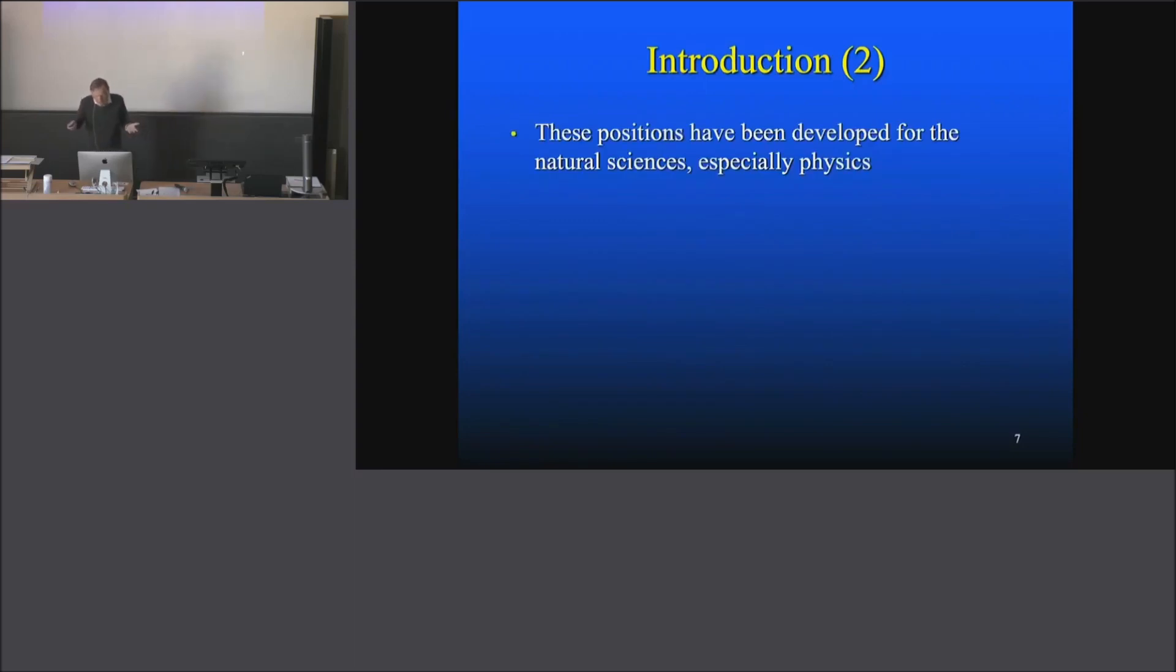Historically, the positions we're talking about are up to 80 years old. They have been developed for the natural sciences. These people were primarily interested in the natural sciences, especially physics. What many people don't know is that the other natural sciences are partly very different from physics. If you try to understand biology with a physicist's mind frame, you will in many cases not understand what's going on. It's a very different discipline. Geology is different, chemistry is different. These disciplines are very different from each other. But the main thing was that these philosophers knew some physics.